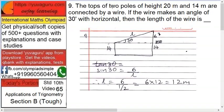Problem 9: The tops of two poles of height 20 meters and 14 meters are connected by a wire. If the wire makes an angle of 30 degrees with the horizontal, then the length of the wire is...